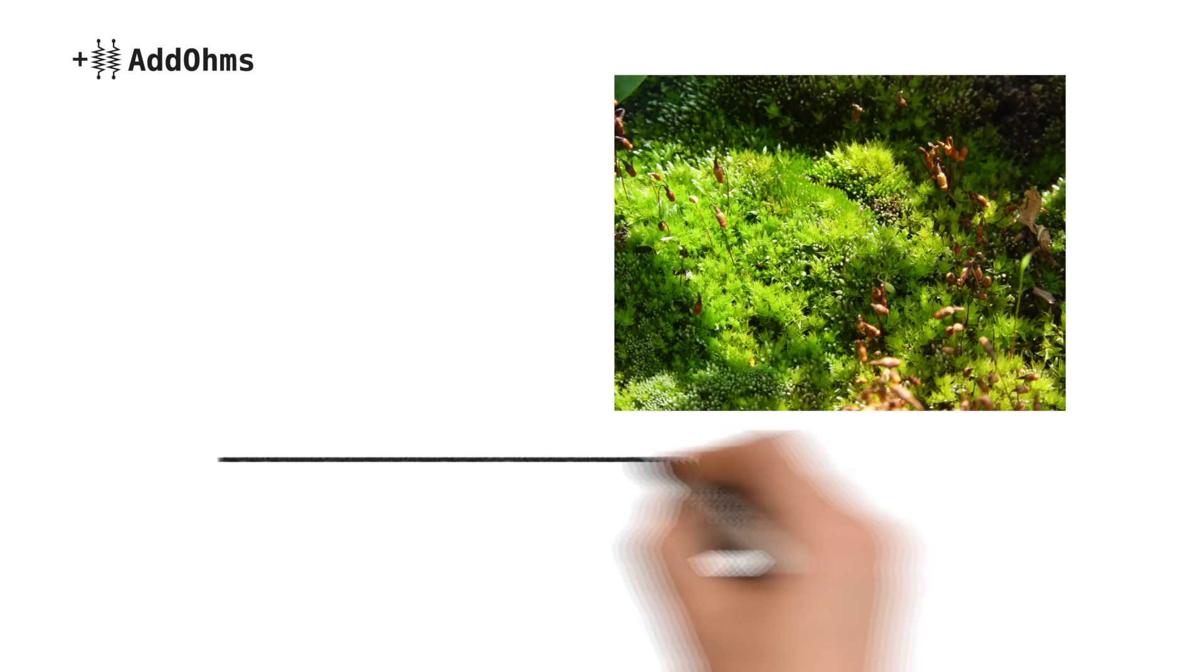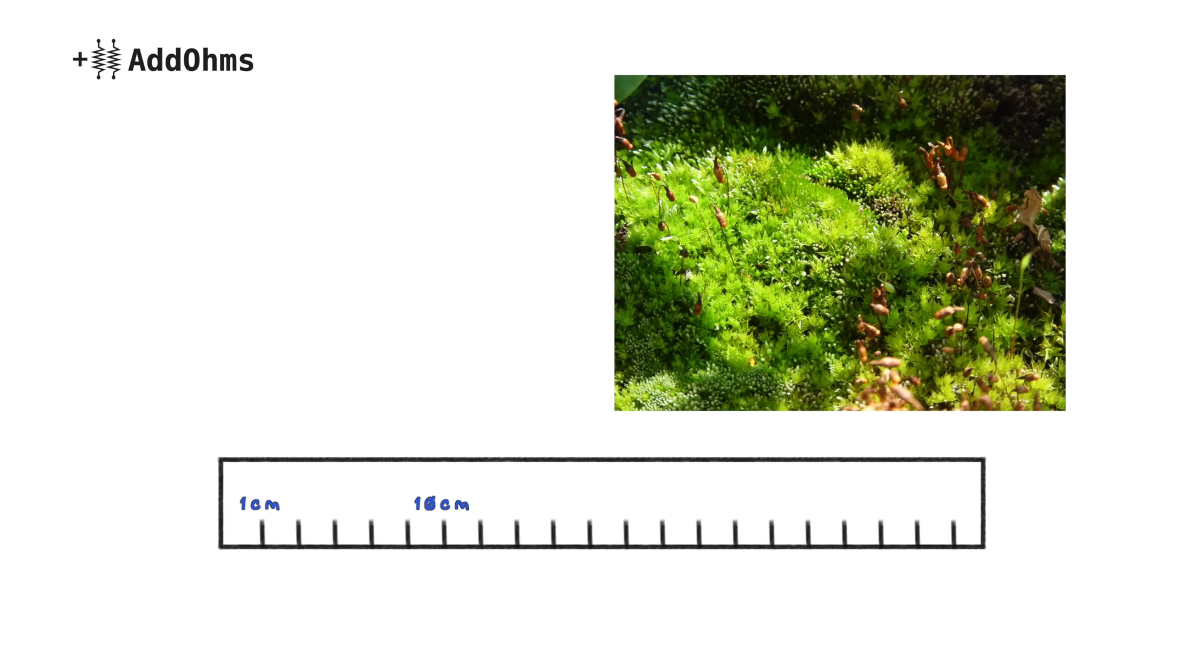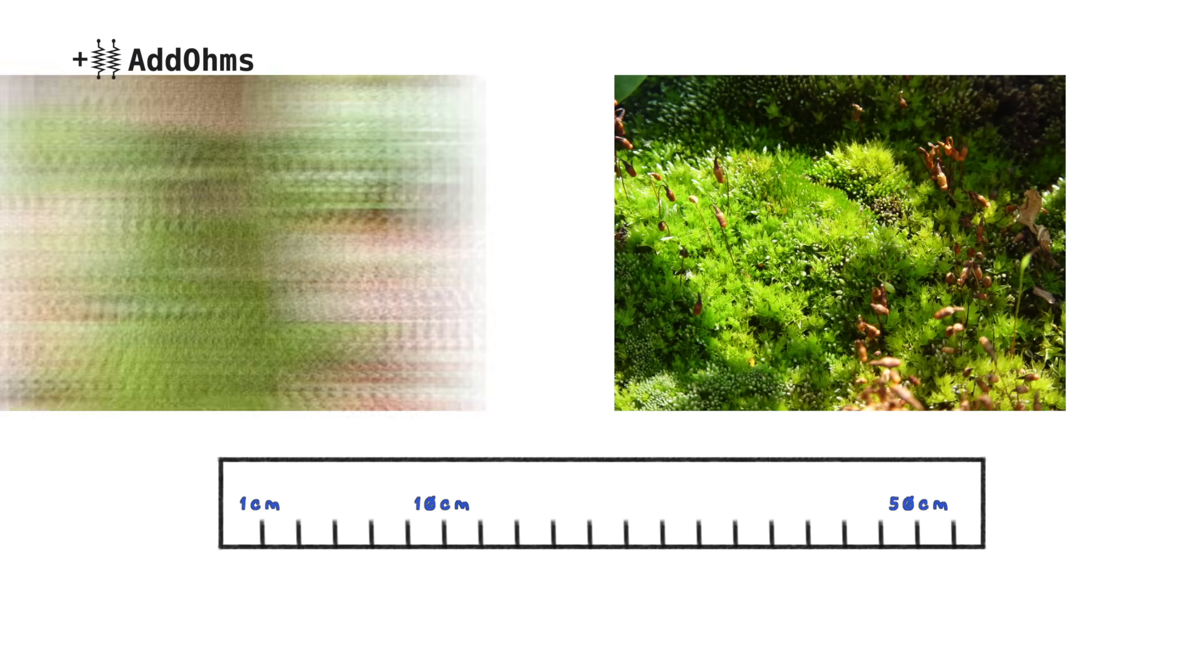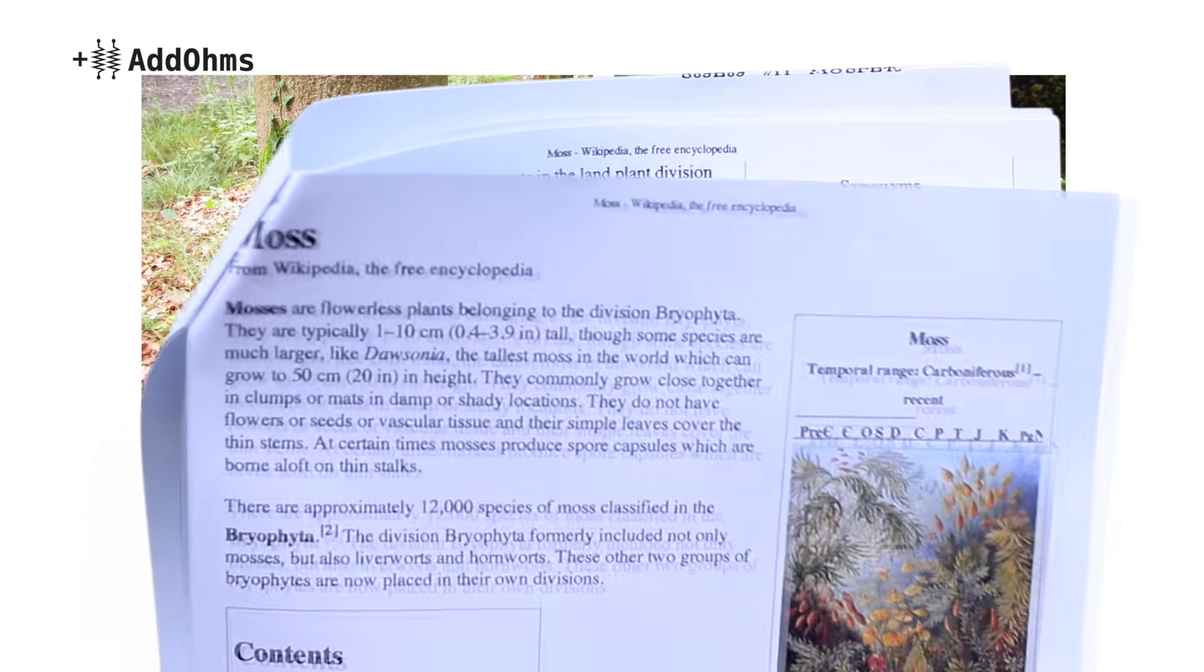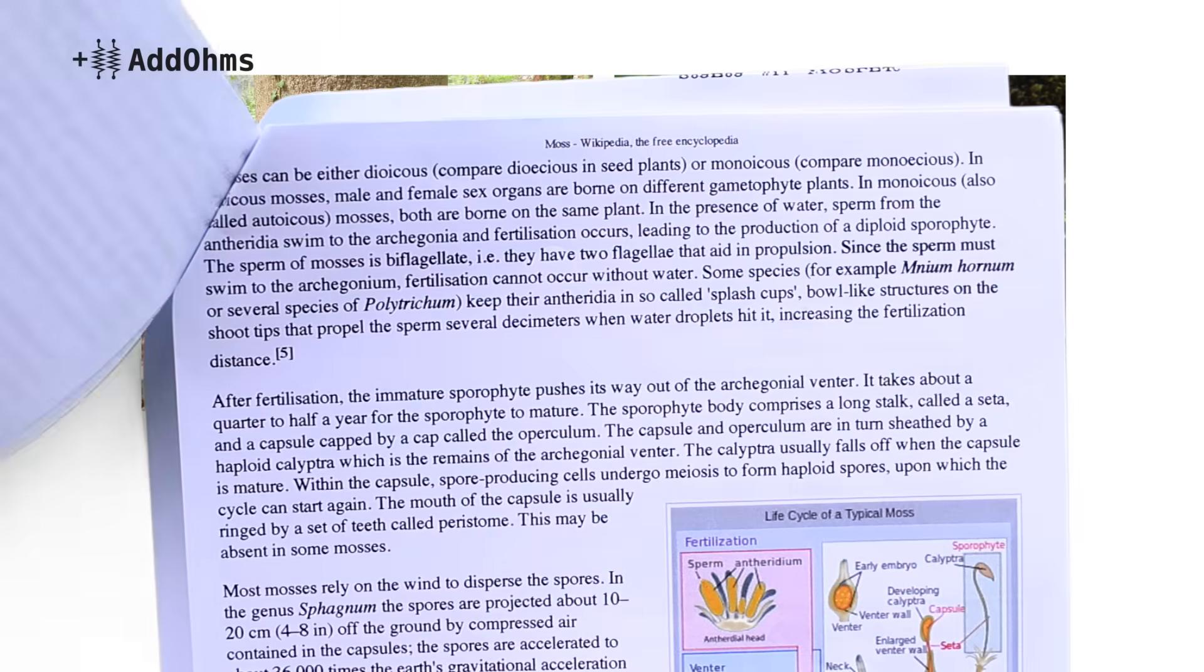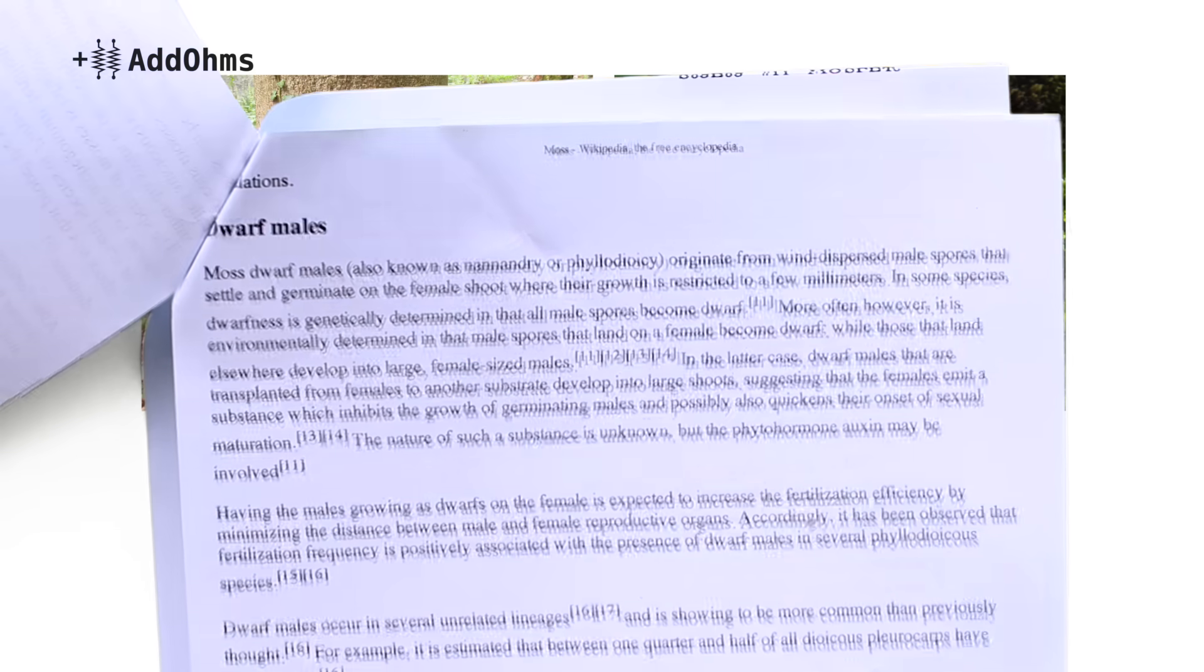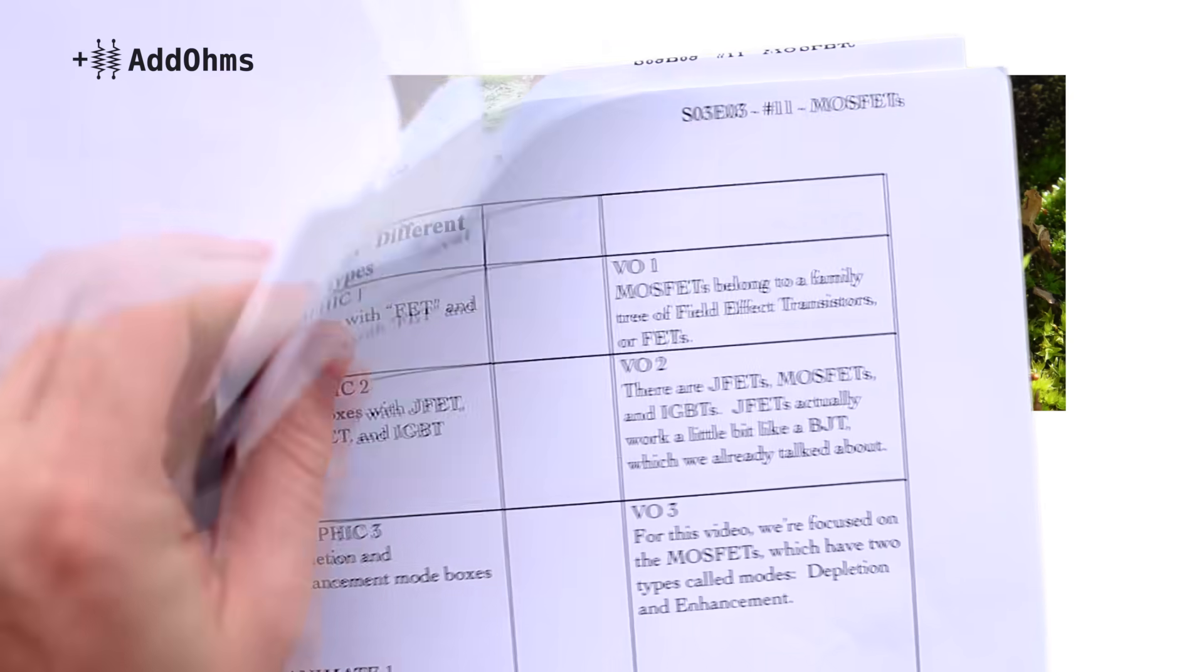Moss is a flowerless plant that typically grows 1 to 10 centimeters. Some mosses grow up to 50 centimeters and can be commonly found on trees. Wait a minute, this is the wrong script. Hold on, the tree sounds right. Okay, here's the other stuff. Let's try this again.